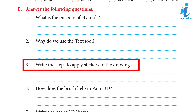3. Write the steps to apply stickers to the drawing. Step 1: Select the 3D shape tool. Step 2: In the 3D shape panel, select the dog given under the category 3D models. Step 3: Select the sticker tool. Step 4: Add eyes and tongue sticker to the cat. Step 5: Zoom in on the cat's tail to add the fur texture. Step 6: Size and rotate the texture as desired.